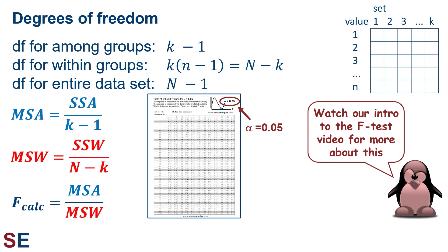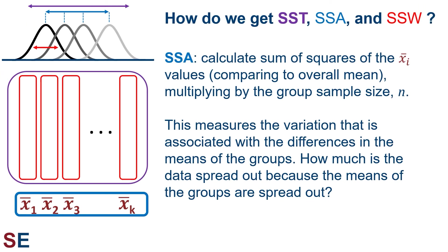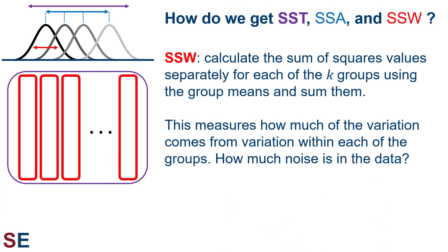Let's look at how we use a data table directly. To get SST, we calculate the sum of squares for all data values comparing each value to the overall mean. To get SSA, we calculate the mean value for each group, then calculate the sum of squares of these group means compared to the overall mean, multiplied by the group sample size n — this measures the variation associated with differences in group means. To get SSW, we calculate the sum of squares separately for each of the k groups using the group means and sum them — this measures how much variation comes from within each group, i.e., the noise in the data.